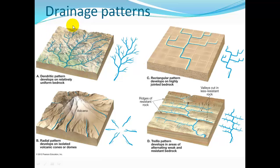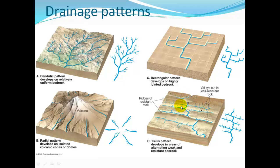On uniform bedrock, a river forms a dendritic pattern — it looks like branching trees, with the main trunk as the main river and big branches as tributaries. Rivers flowing off a circular mountain or volcano form a radial pattern — they flow outward in a circle. In jointed rocks, water follows areas of least resistance along those joints, forming a rectangular pattern. Where you have alternating resistant and non-resistant rock, a stream cuts quickly across resistant rock, erodes the less-resistant rock, then cuts through the next resistant layer, forming a trellis pattern.